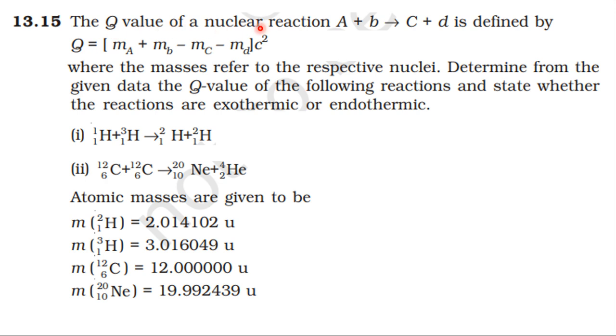The Q value of a nuclear reaction A plus B gives C plus D is defined by Q equals Ma plus Mb minus Mc minus Md into C squared, where the masses refer to the respective nuclei. Determine from the given data the Q value of the following reactions and state whether the reactions are exothermic or endothermic.